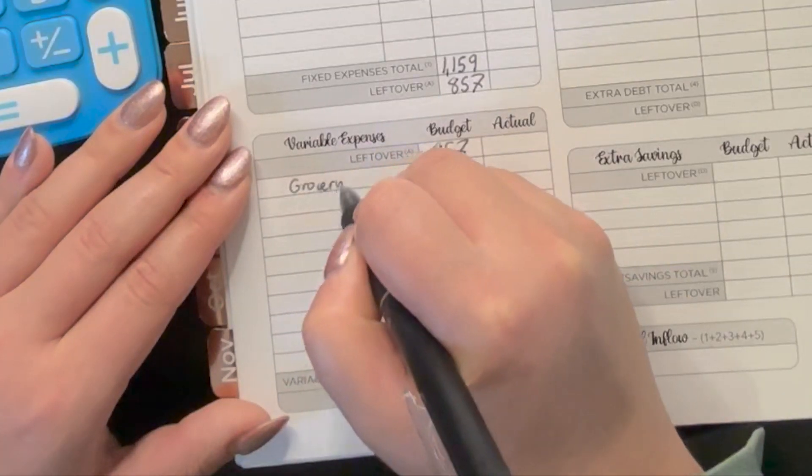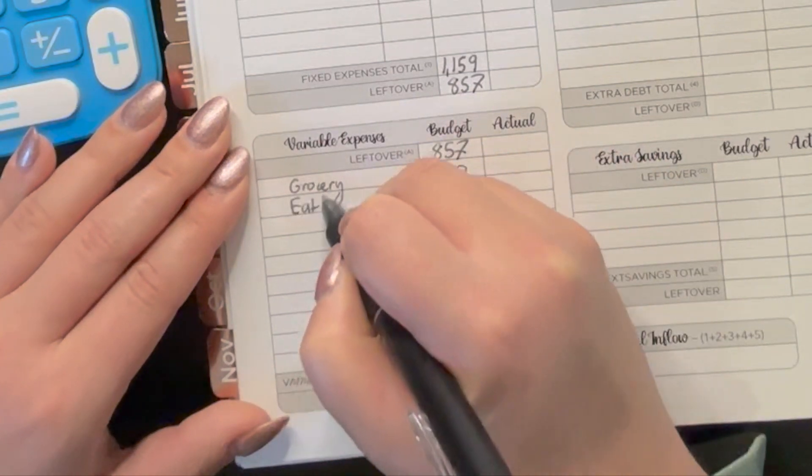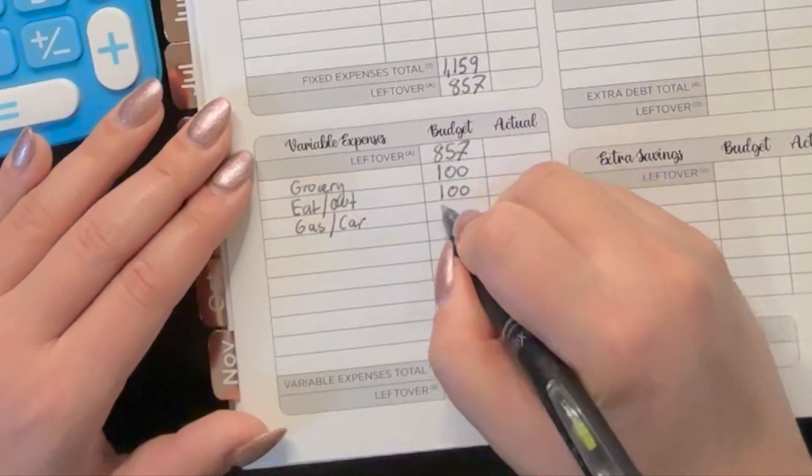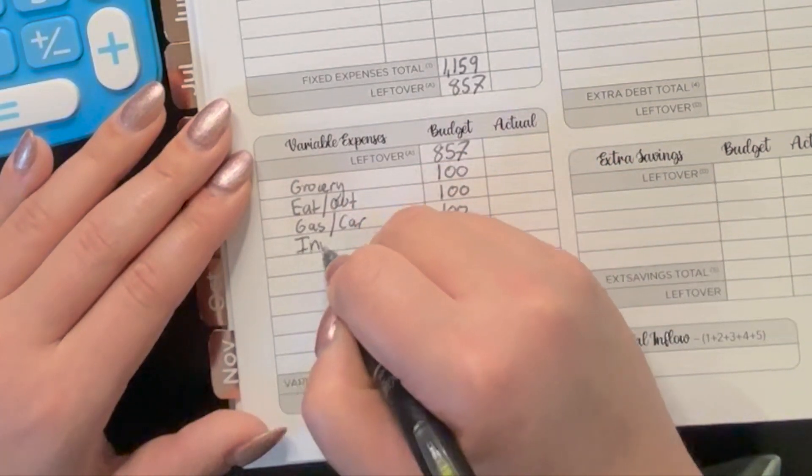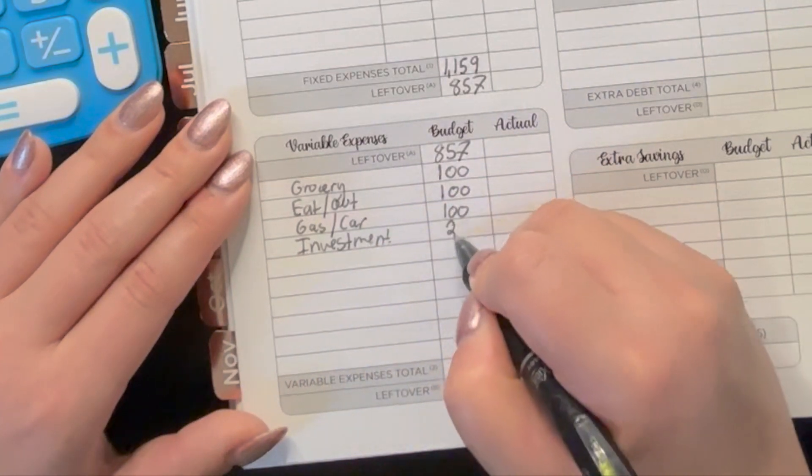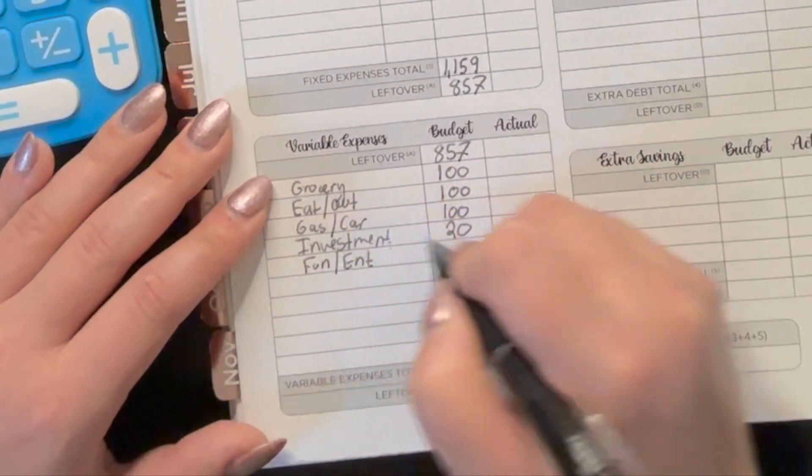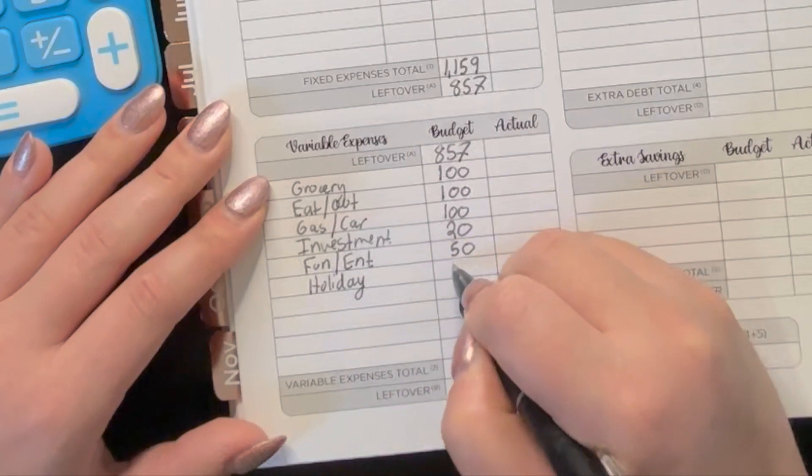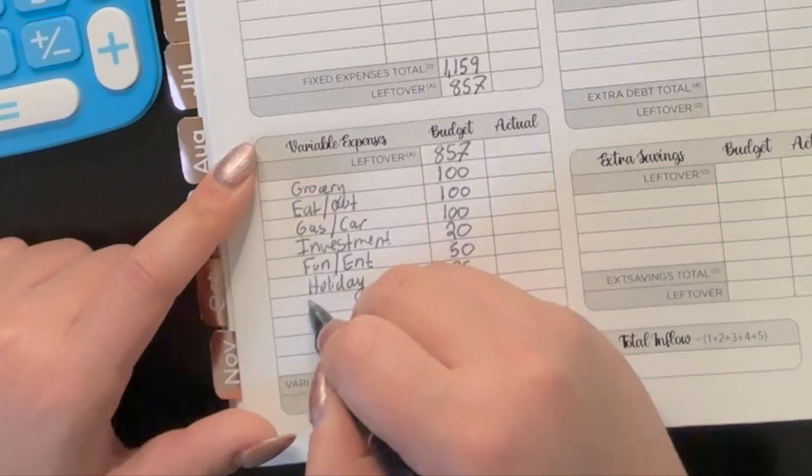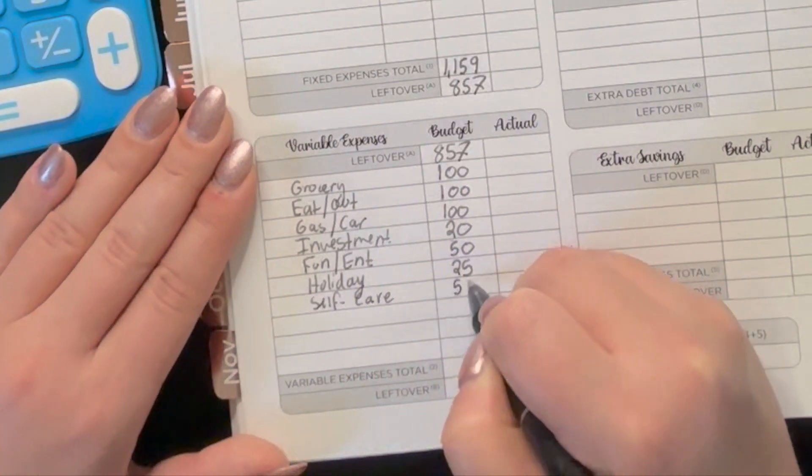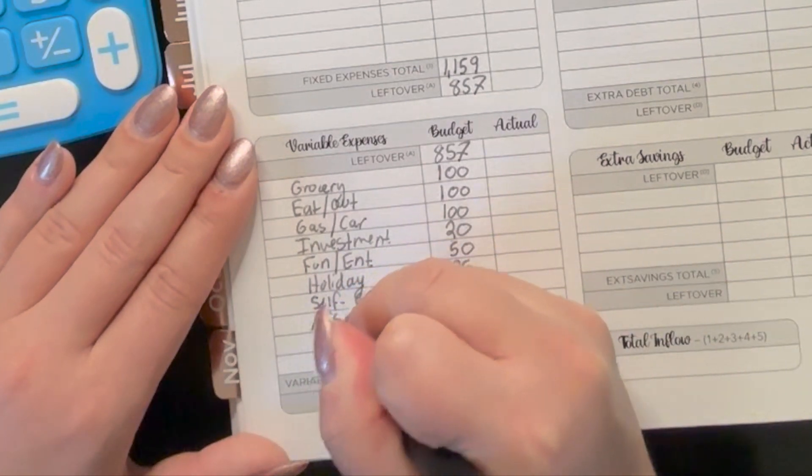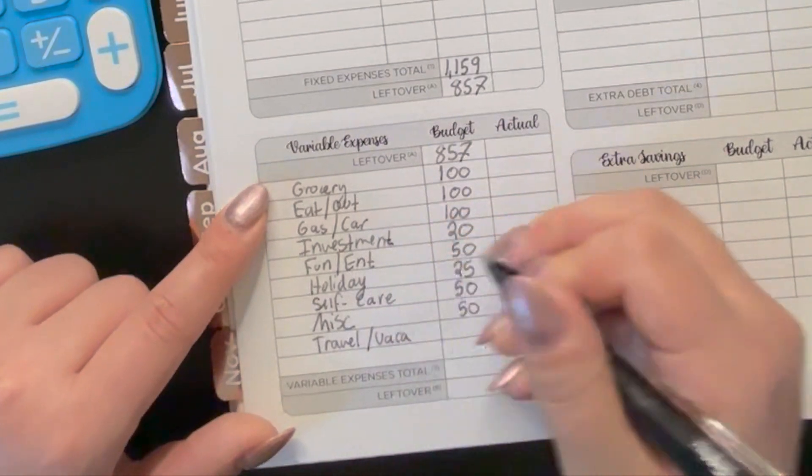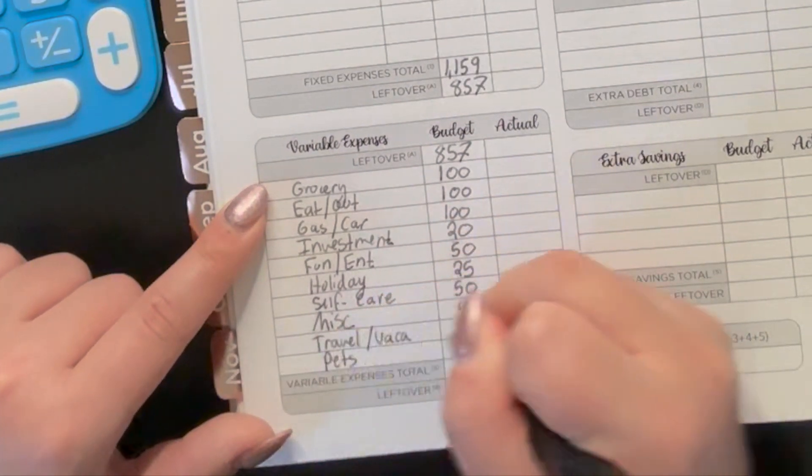So we've got grocery for $100. Eating out, we're going to budget $100 for as well. Gas and car, because I am traveling for the Thanksgiving holiday, we're going to do $100. Investment will be $20. Fun and entertainment will be $50. Holiday, we're going to budget $25, any miscellaneous stuff for the Thanksgiving holiday. And then we're going to do self-care for the nails for $50. And then miscellaneous, we're going to budget $54. And travel, if there's any unexpected expenses with traveling for the holiday, we're going to do $25. And then pets, we're budgeting $0 for.